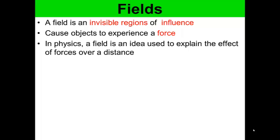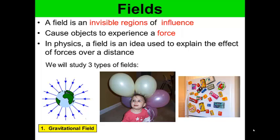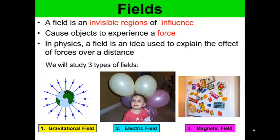We will study three types of fields in this course. The first is the gravitational field, which is what you experience while standing on the Earth. The second is an electric field — you can see a baby subjected to an electric field, where static electricity holds balloons to her head. And a magnetic field, which will hold magnets onto a piece of metal subjected to magnetism.